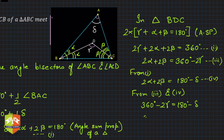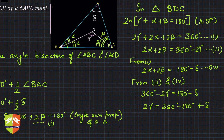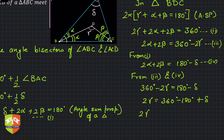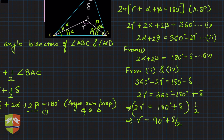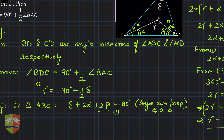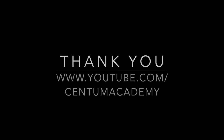Simplifying: 2γ equals 360 degrees minus 180 degrees plus δ, which gives 2γ equals 180 degrees plus δ. Dividing both sides by 2: γ equals 90 degrees plus δ divided by 2. This is exactly what we needed to prove. Please remember this corollary.